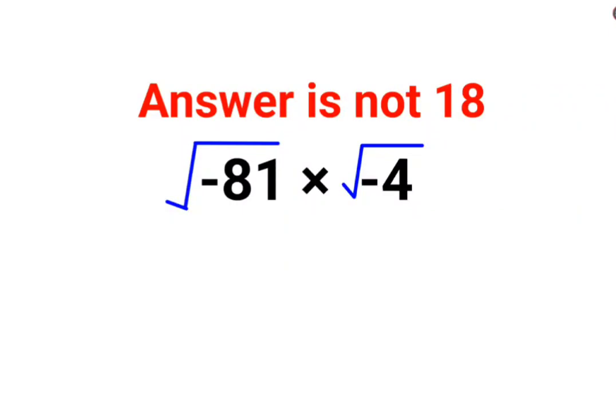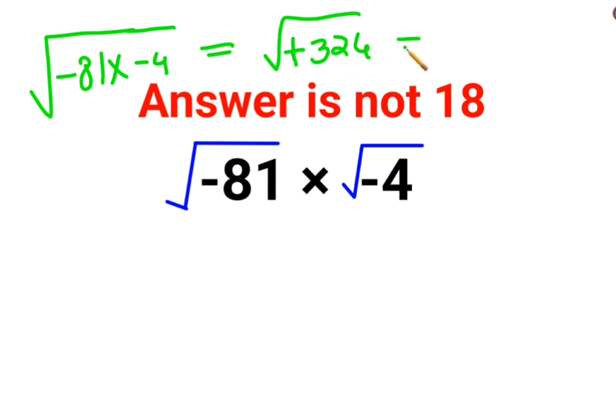Welcome everyone. A lot of people thought the answer for this one was 18 because they combined everything under one root. Minus 81 into minus 4, and as we know, minus times minus gives a positive answer. So they thought the answer was 324, positive 324. That's why they thought the answer was 18, but that is absolutely incorrect.